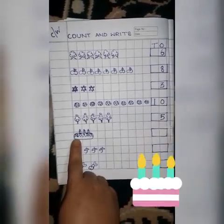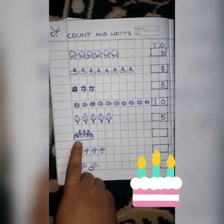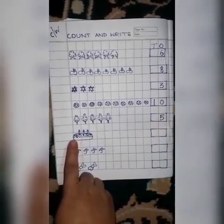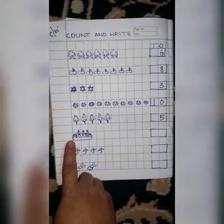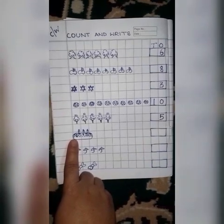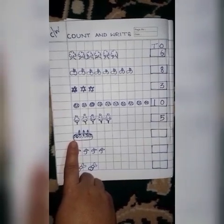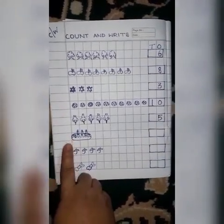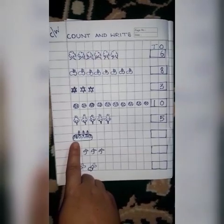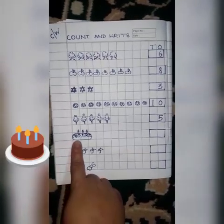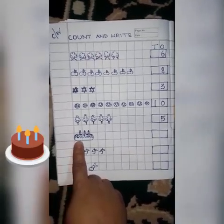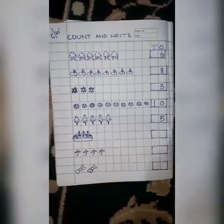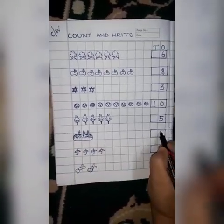Now, this is a cake. Delicious cake! See how many cakes are here? Only one cake. Count it with your finger: 1. So, we will write here: 1.